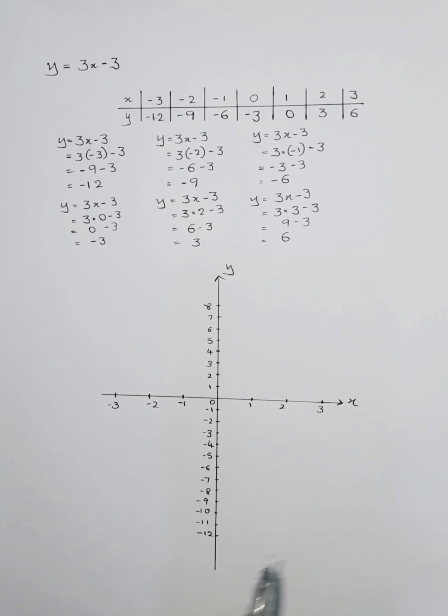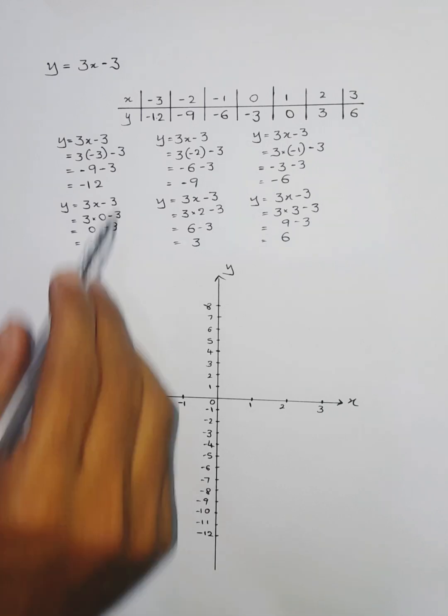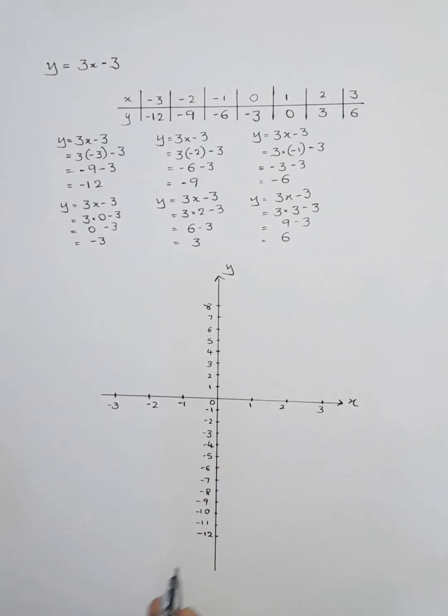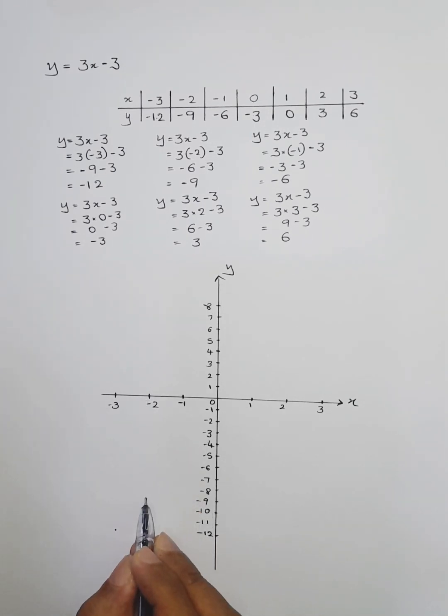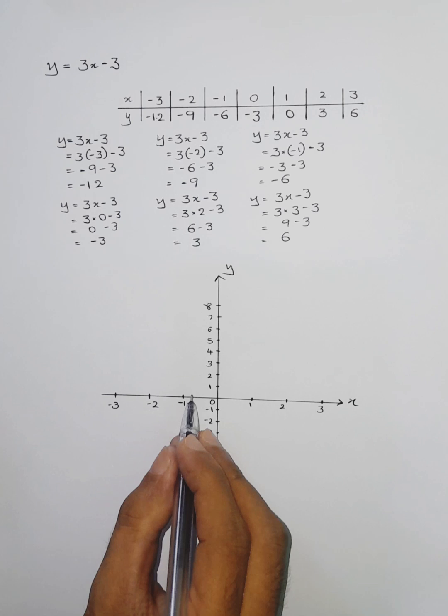And now we'll mark the coordinates. -3 to -12, the first one, -3 to -12. And now the next one, -2 to -9. You have to place a dot there. And now -1 to -6.